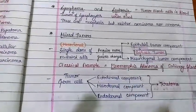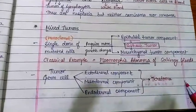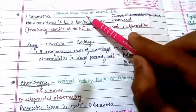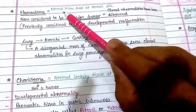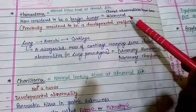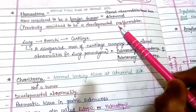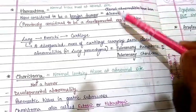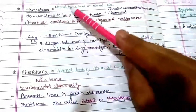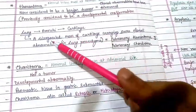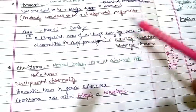Germ cell tumors may have ectodermal, mesodermal, or endodermal components. If all three components are present together, it is known as a teratoma. Hamartoma is a normal tissue mass at a normal site. Previously it was considered a developmental malformation, but now it is considered a benign tumor because clonal abnormalities have been discovered among the cells of the tissue.